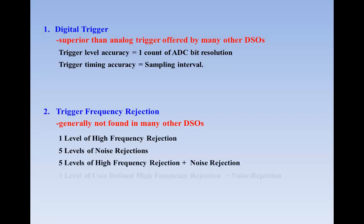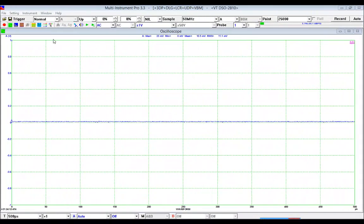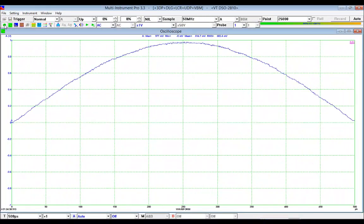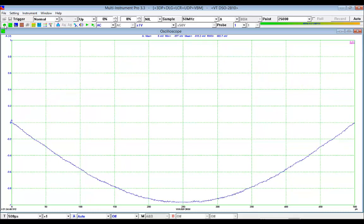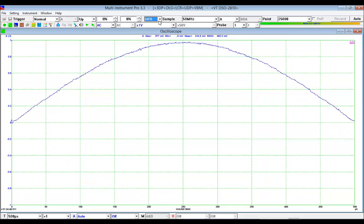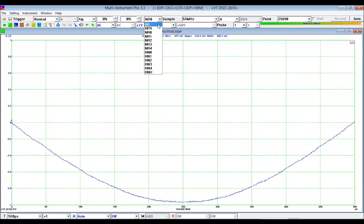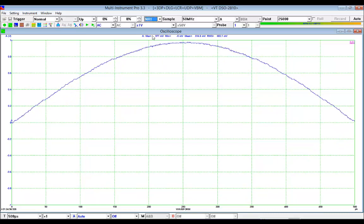Here is an example of using trigger frequency rejection function. The trigger frequency rejection is not used and the waveform display is not stable. Now we change it to high frequency rejection, no improvement. Then noise rejection level 0, improved a bit. Noise rejection level 1, stable now.